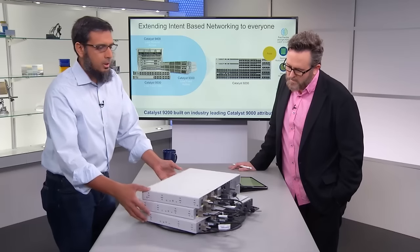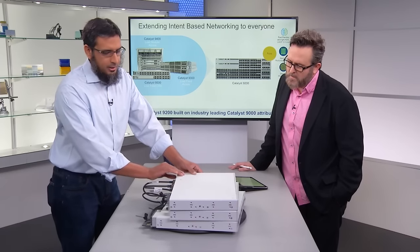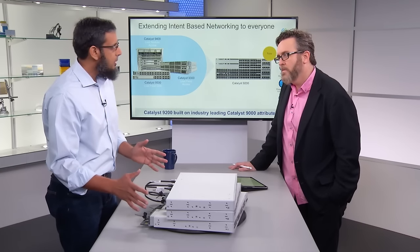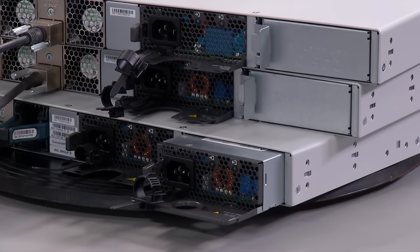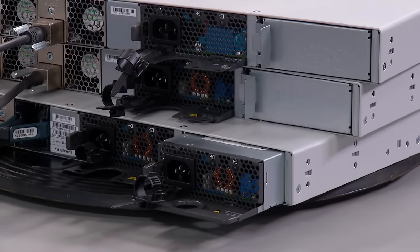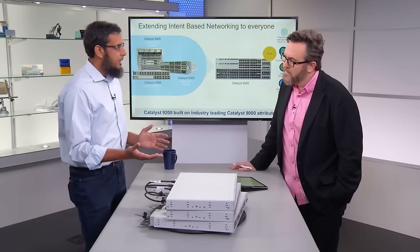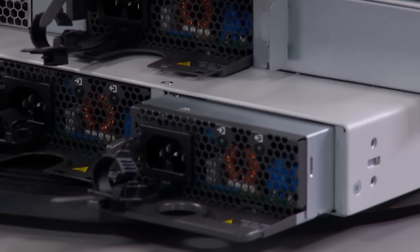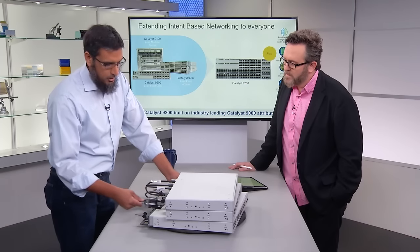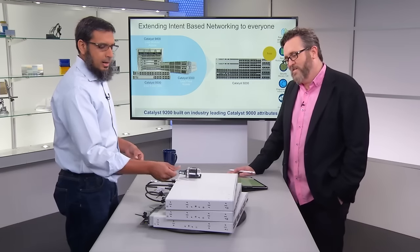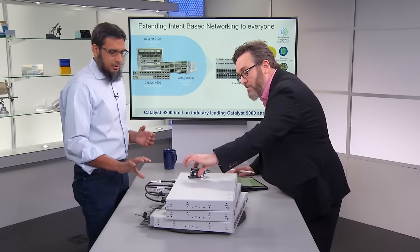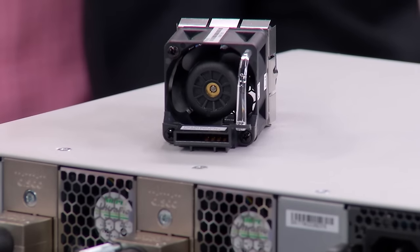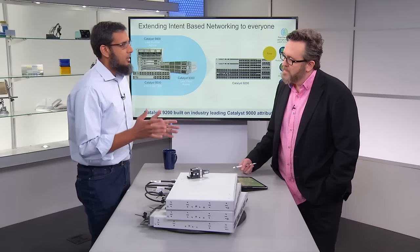Let me show you a couple of things in the back. On the Catalyst 9200 series, we have dual redundant power supplies. That means if one of your power supplies fails, you are already covered with the second one. You also have modular power supplies, which means if one fails, you can actually replace it instead of RMAing your entire unit. The same goes for fans on the Catalyst 9200 — those are modular as well, so you can replace them if needed.